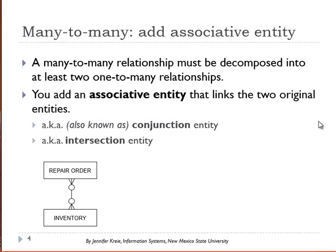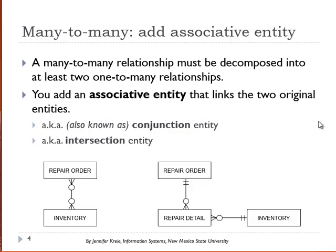You add an associative entity in the data model. It comes between the two existing entities. This has also been called a conjunction or intersection entity. So what we see here is you still have repair order and you still have inventory, but you have a table between them.